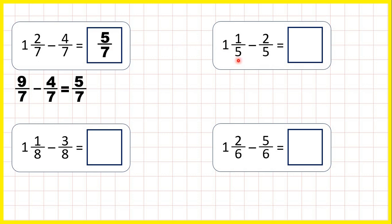One and one-fifth minus two-fifths. Again, the number we're subtracting is larger, but we know that one and one-fifth can be written as an improper fraction.